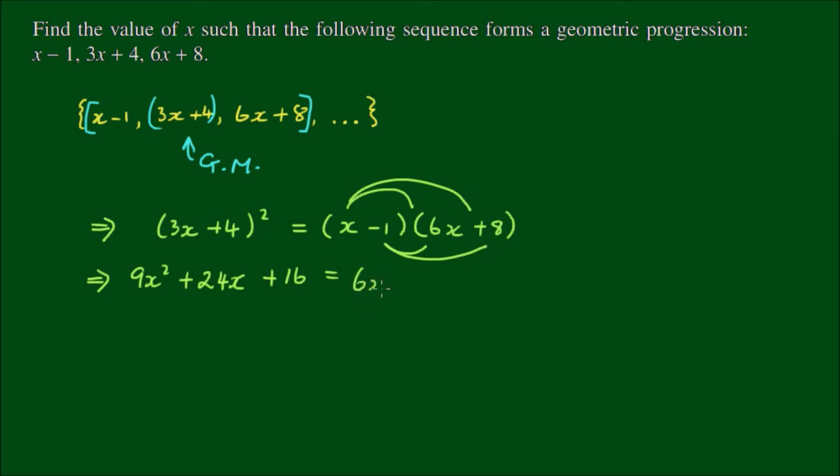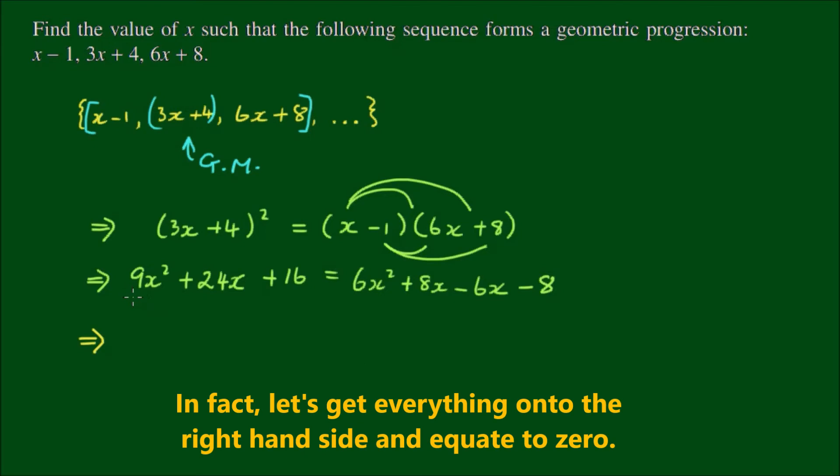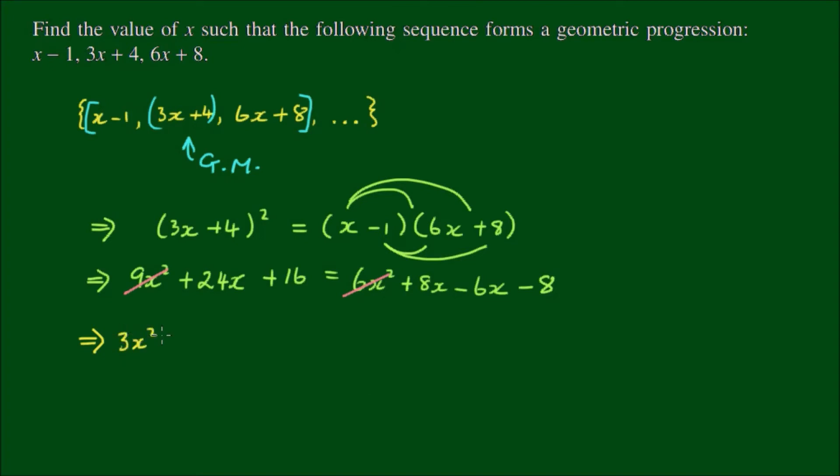So we'll just FOIL the left-hand side terms. We have 6x squared plus 8x minus 6x minus 8. So simplifying further, let's get all of the x's on one side. The x squared terms reduces to 3x squared. The x terms reduces to 22x. And the free terms reduces to plus 24 equals 0. So we have a quadratic equation here.